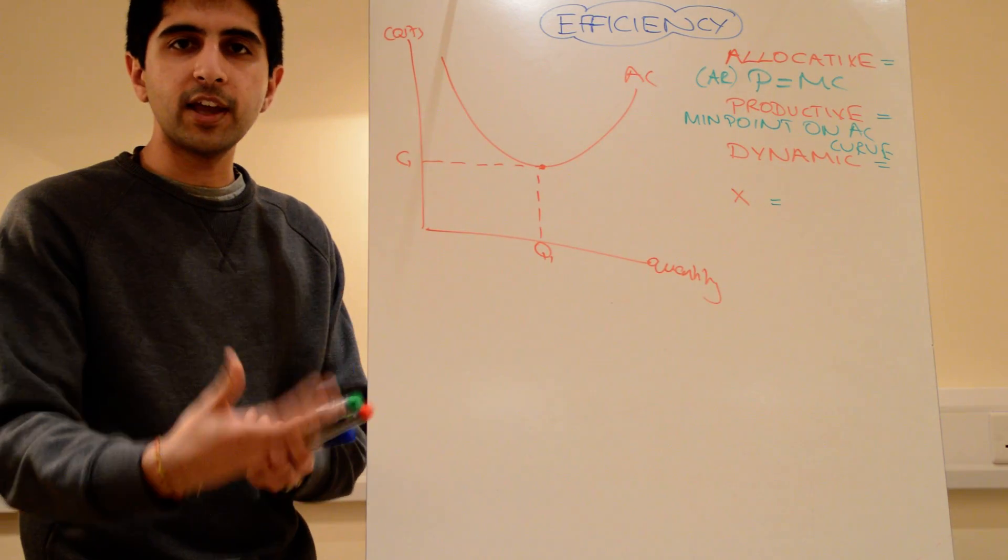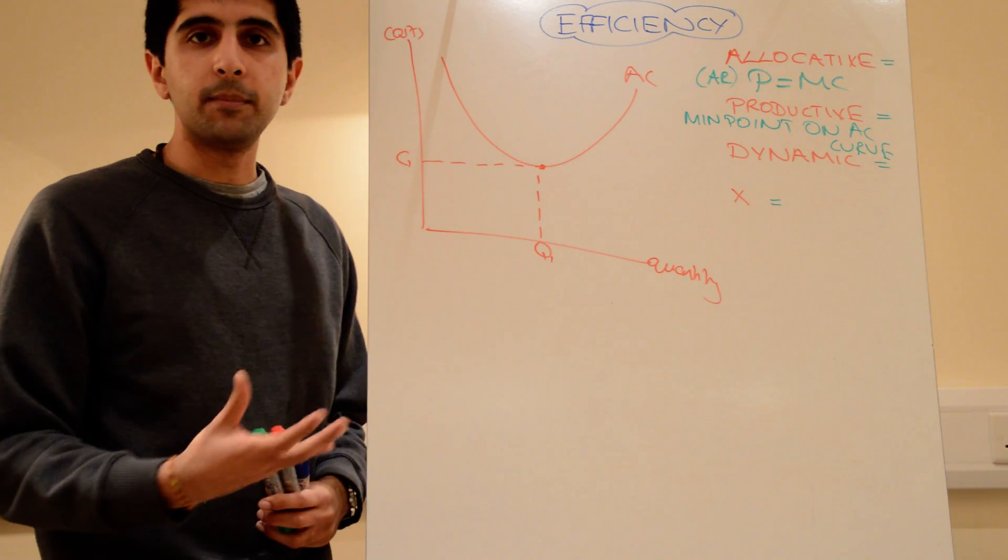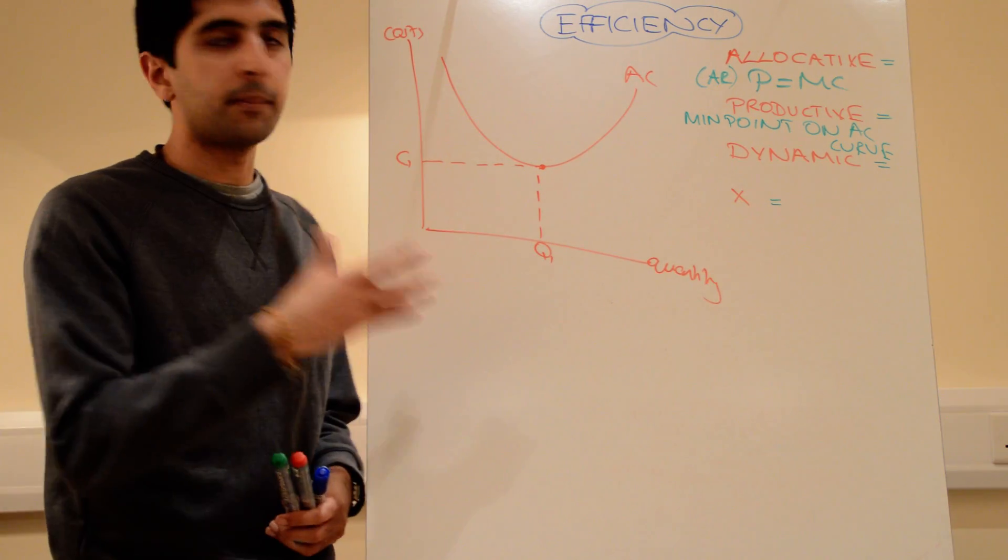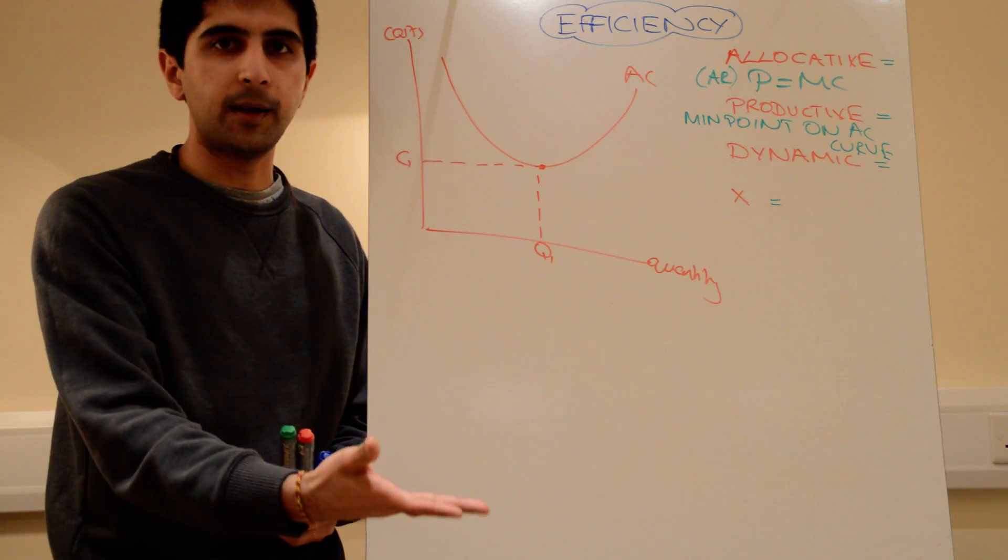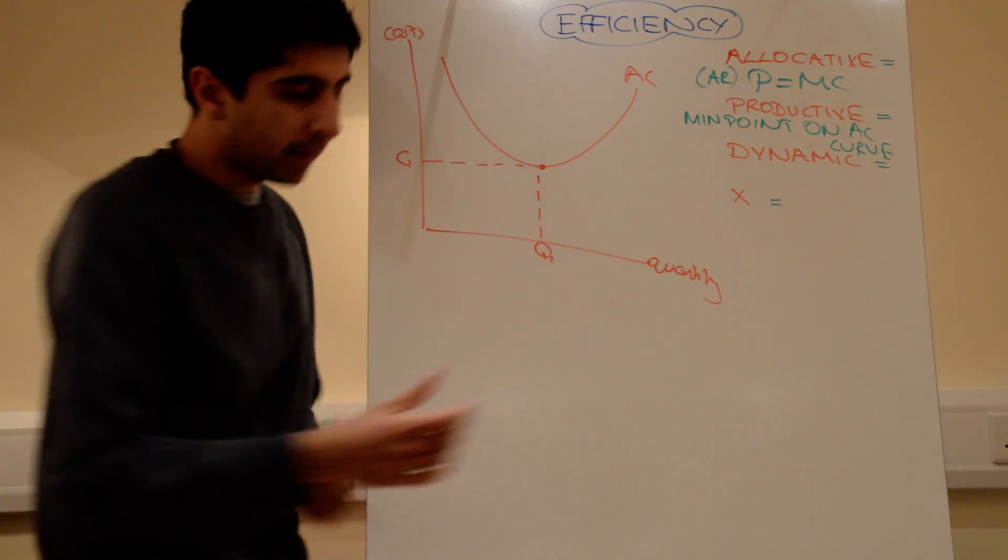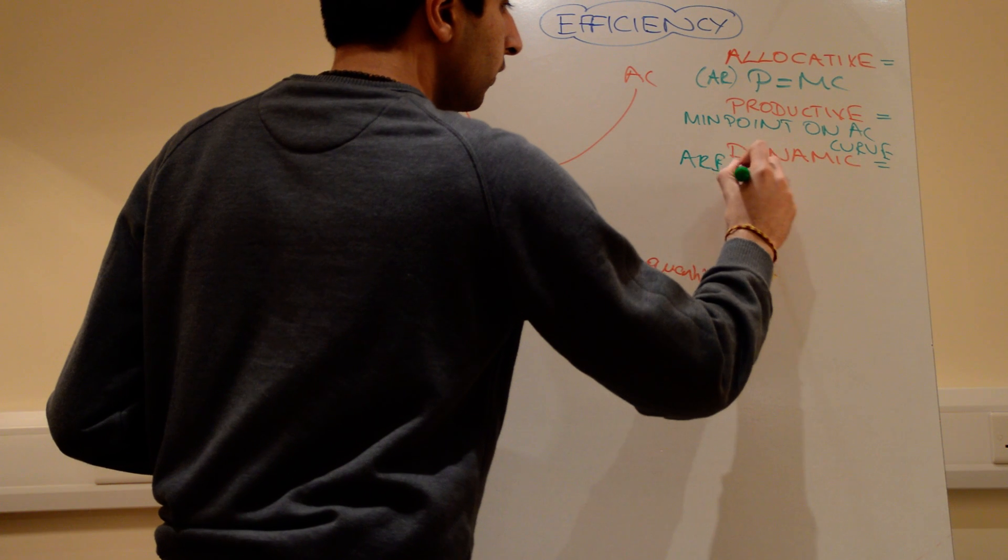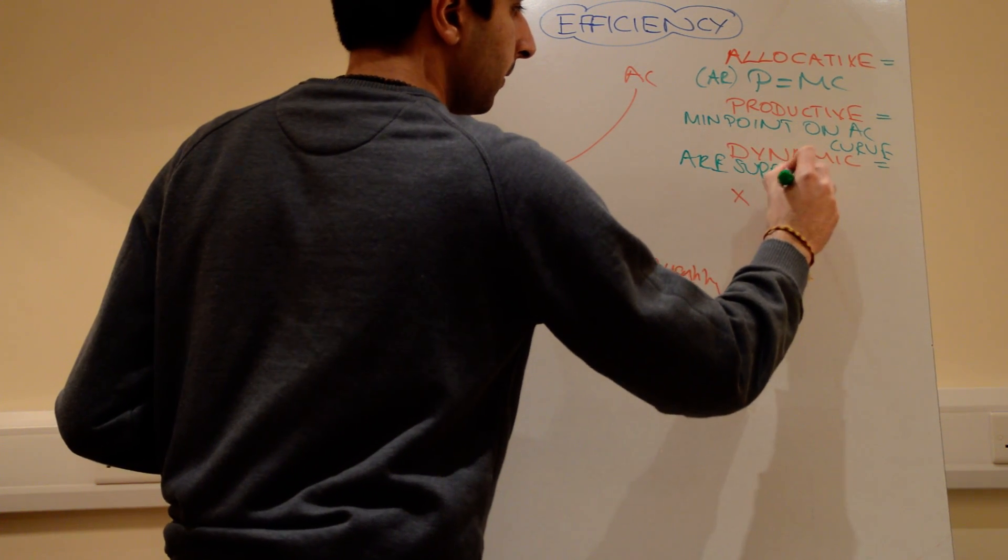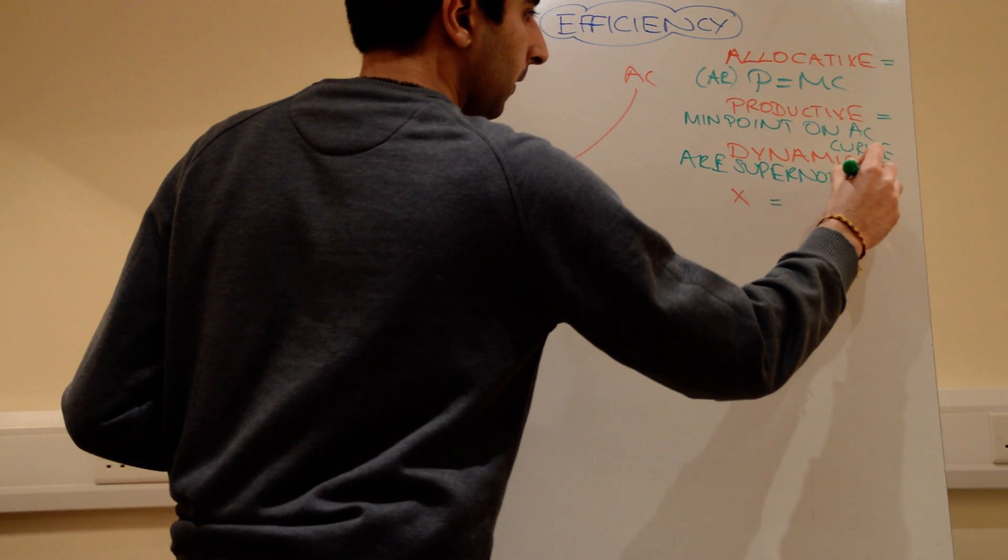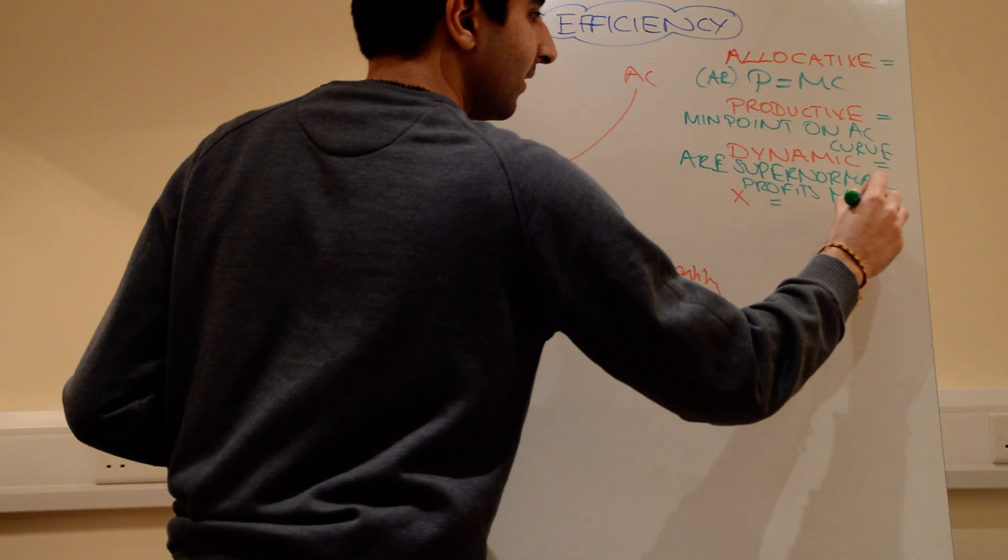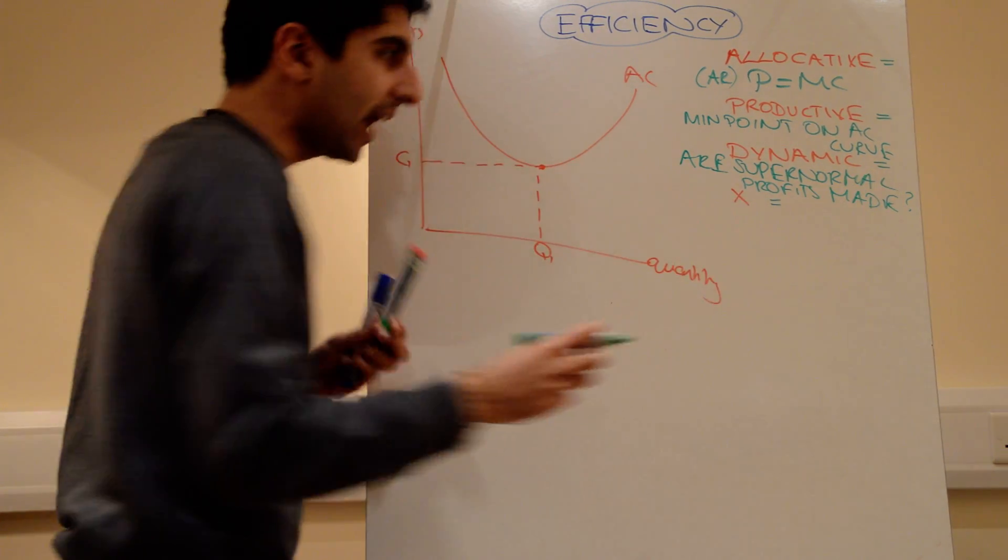But the point is over time, through innovation, through new developments, unit costs will be lowered, which again will be good for the firm and for the consumer over time. So dynamic efficiency, basically the question is, are supernormal profits being made?